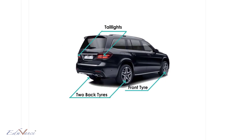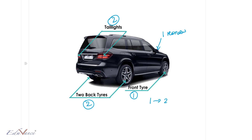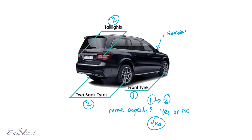Let us look at this view. In this view I can see one front tire, two back tires, two tail lights, and one rear view mirror. Again, if you compare it to images one and two, can we see more aspects of the car? Yes or no? The answer is yes.